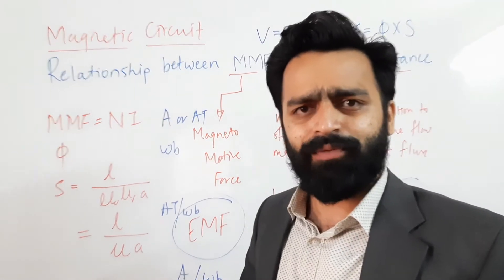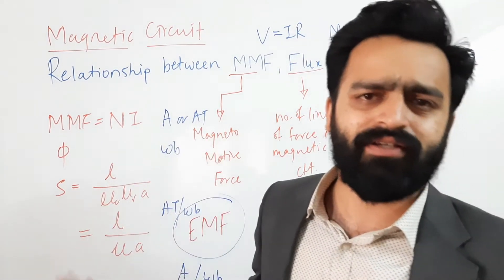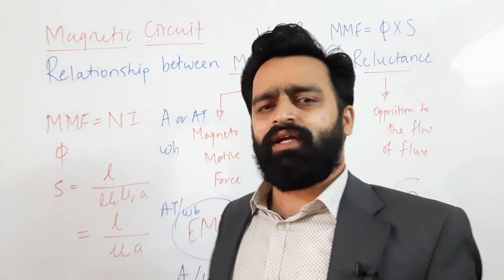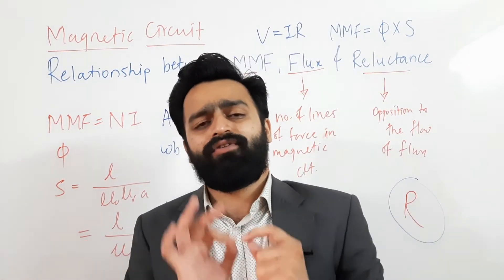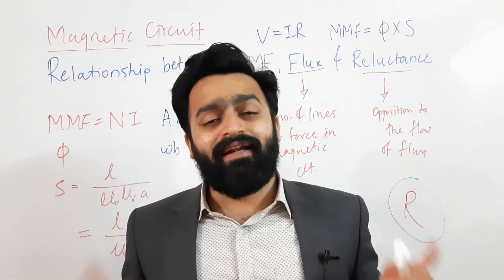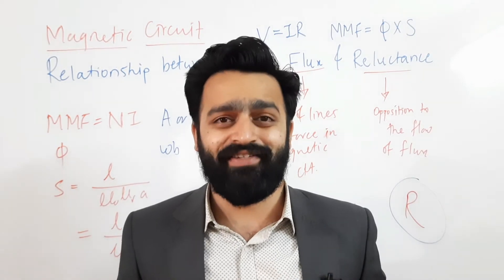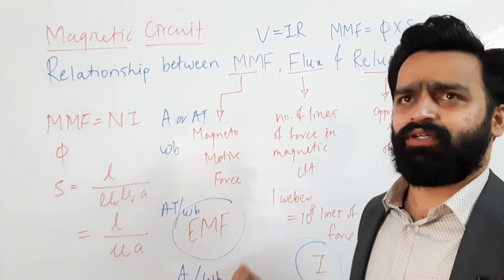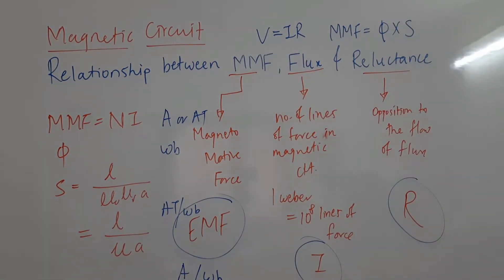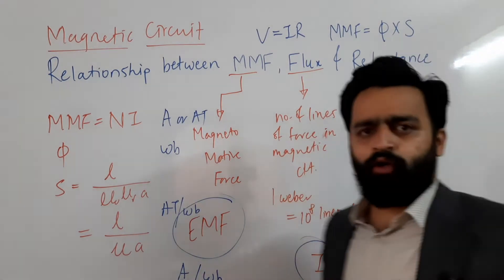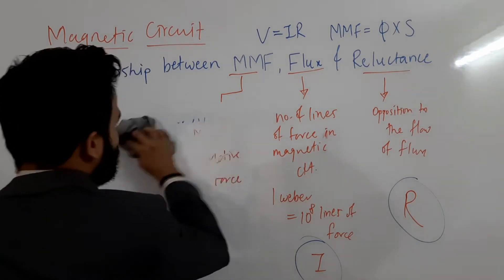Please take a couple of minutes to note down these points. It will take only about five minutes to derive the relationship between MMF, flux, and reluctance, so I request you to watch the complete video. Now I am going to erase this and we will proceed with the derivation.